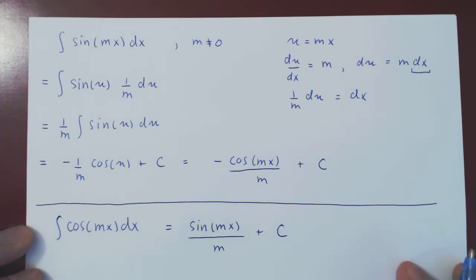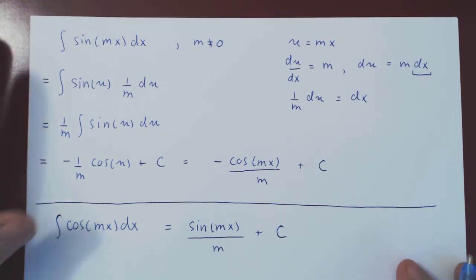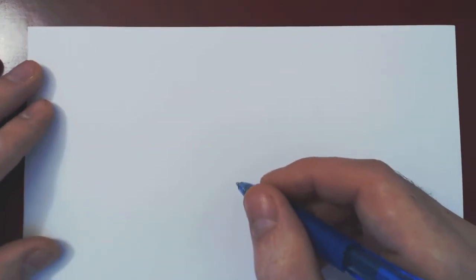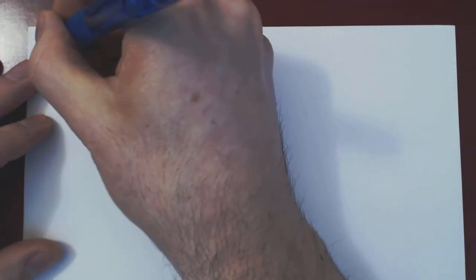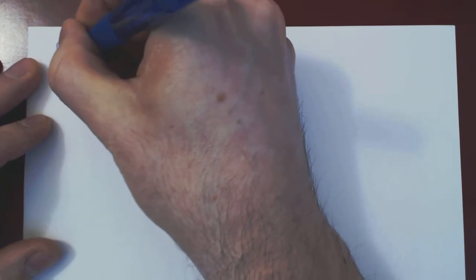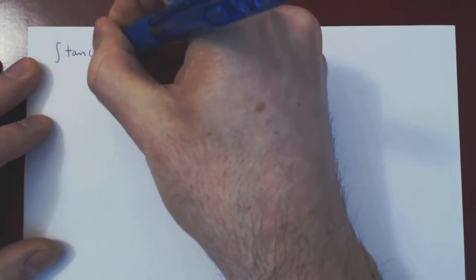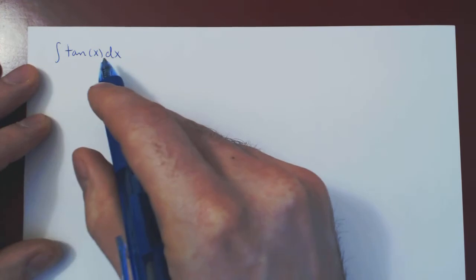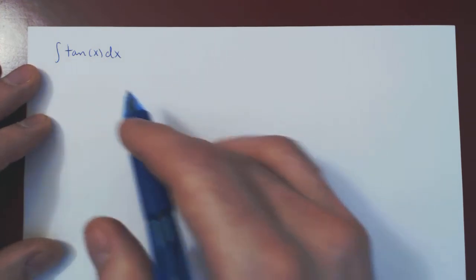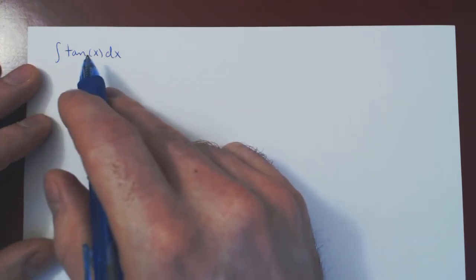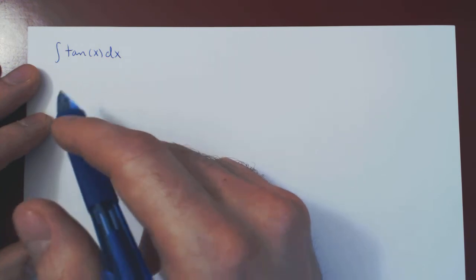Now let's consider two more trigonometric integrals that can be tackled with a u-substitution — again, fundamental trigonometric integrals. The first one is the integral of tan x. If you leave it as is, it may not be clear how to proceed. But if you rewrite tan as a function of sine and cosine, the path forward becomes quite apparent.